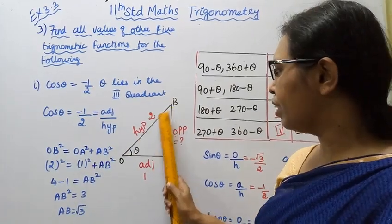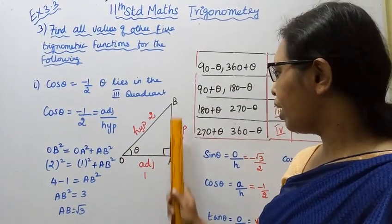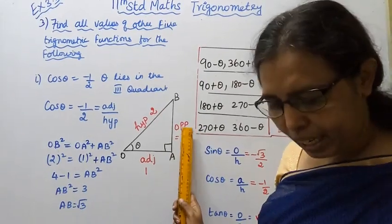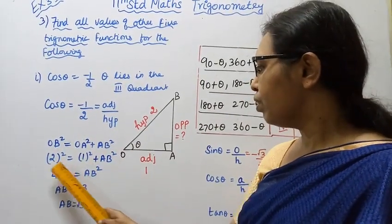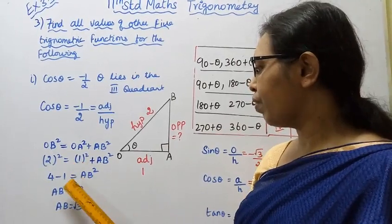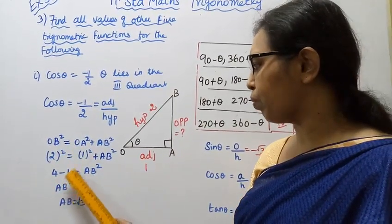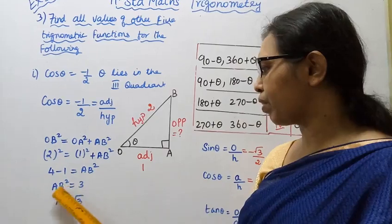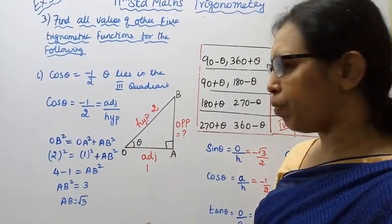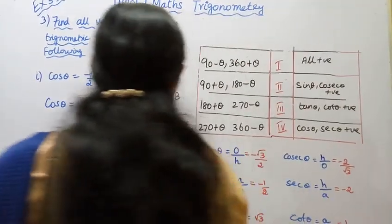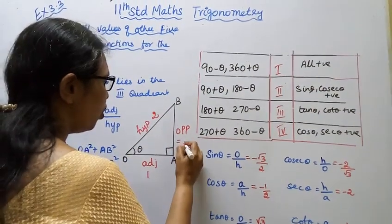OB square equals OA square plus AB square. OB square is 2 squared, OA square is 1 squared. So 4 equals 1 plus AB square, giving AB square equals 3, therefore the opposite side AB equals root 3.